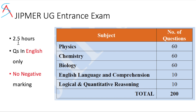The JIPMER exam is 2.5 hours in duration and the question paper language is English only. The good thing about JIPMER is there is no negative marking. There are 10 questions related to English, 10 questions related to logical and quantitative reasoning, and 60 questions each for physics, chemistry, and biology.